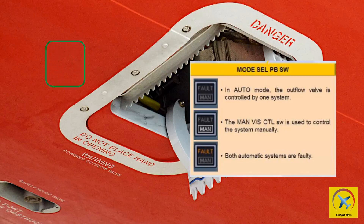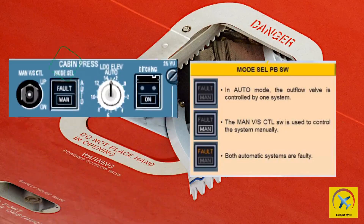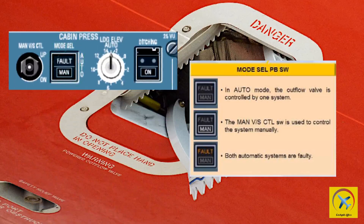The system uses landing elevation and QNH from FMGS, and pressure altitude from the Air Data Inertial Reference System. If FMGS data is not available, it uses the captain's barometric reference from ADIRS and the landing elevation selection input. Manual mode uses the manual vertical speed toggle control switch to control the system. A fault light in amber with an ECAM message appears when both automatic systems are faulty.